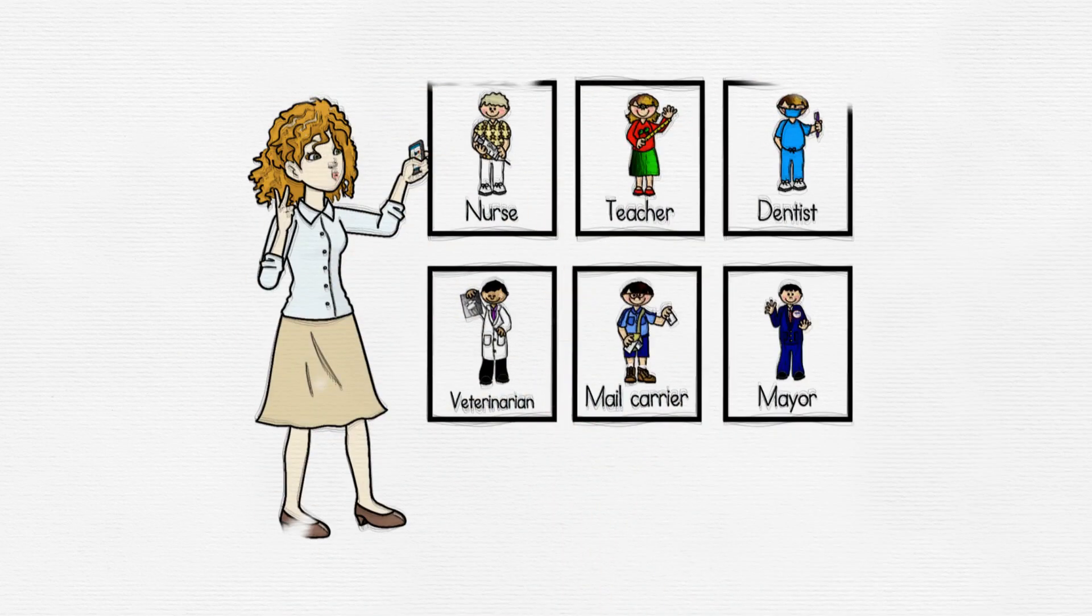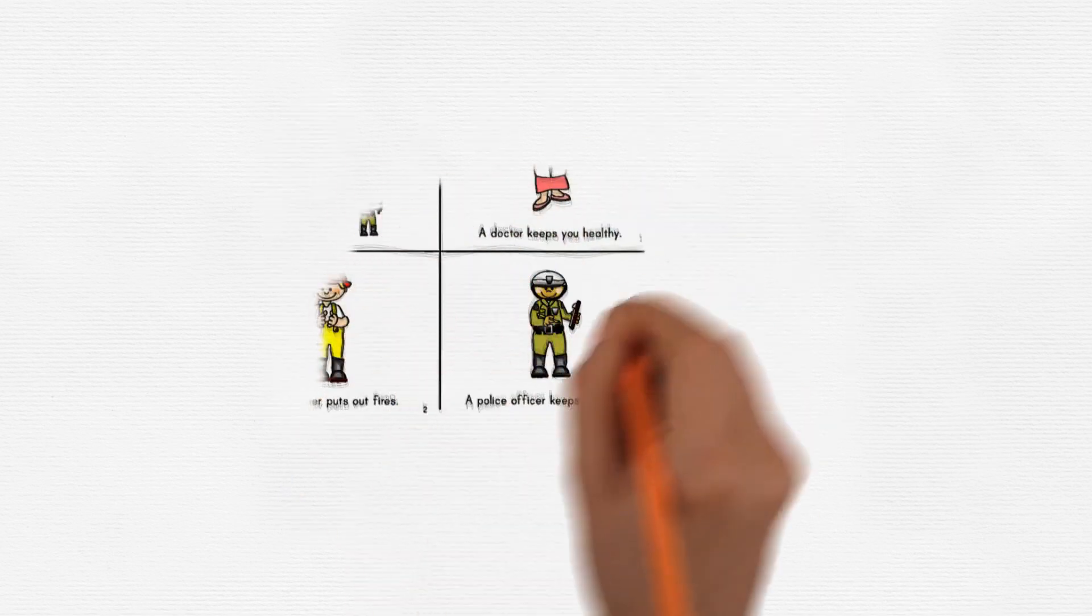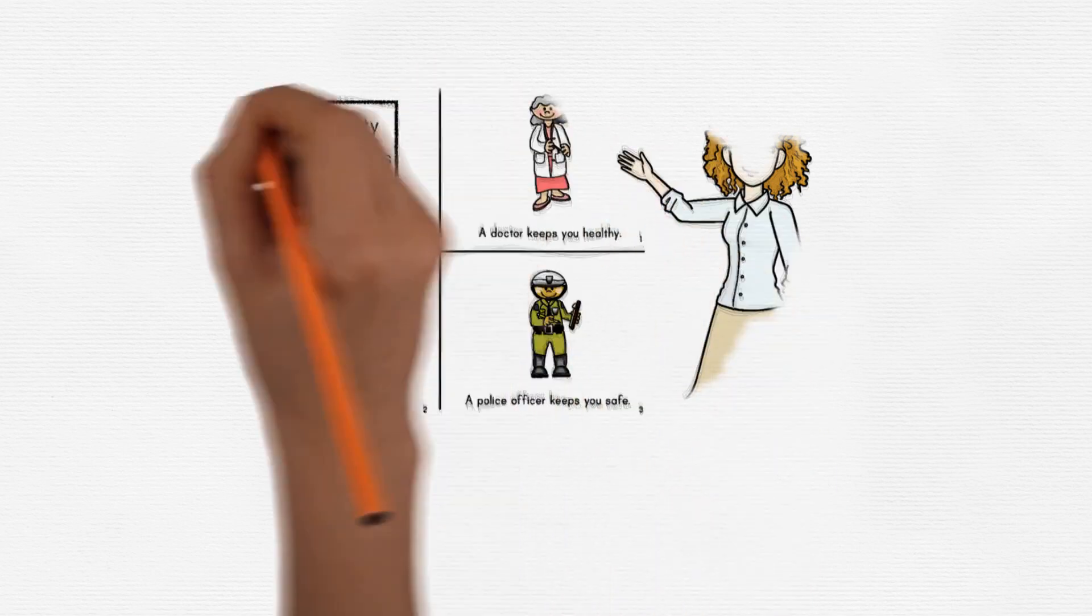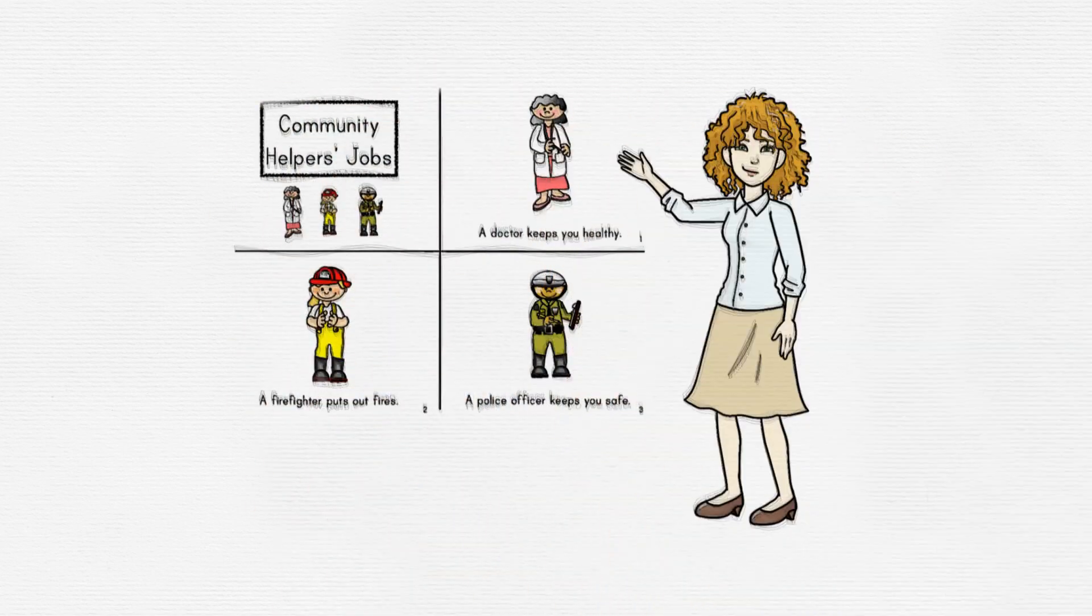Look at our big chart on the board. Community workers such as doctors, firefighters and police officers are community helpers. A doctor keeps you healthy. A firefighter puts out fires. A police officer keeps you safe.